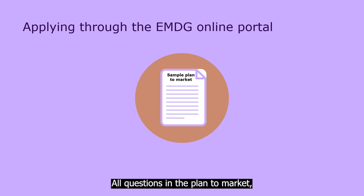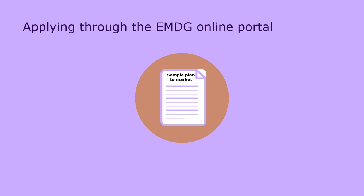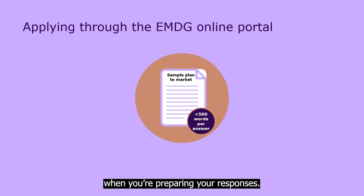All questions in the plan to market, and most other questions in the application form, have a maximum limit of 3000 characters per answer — that's about 500 words. So stick to this word count when you're preparing your responses.